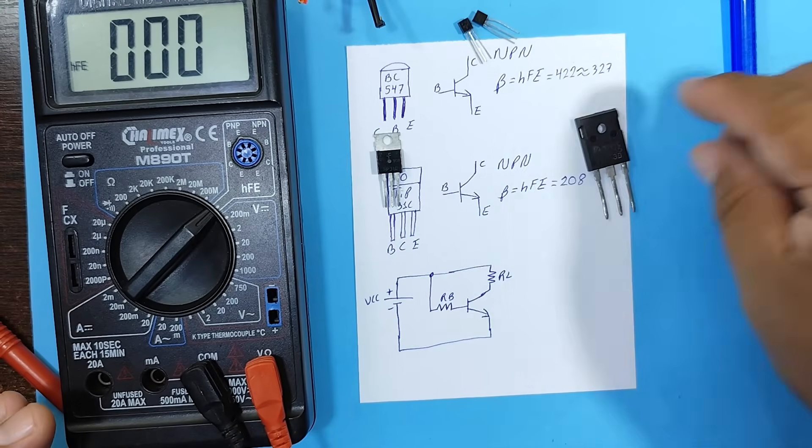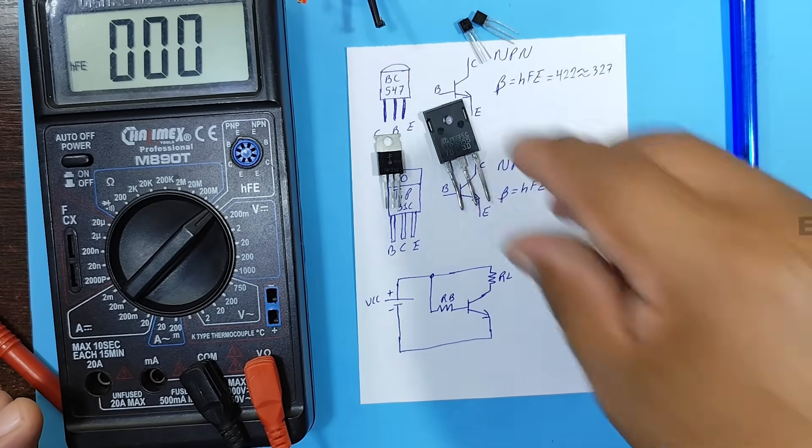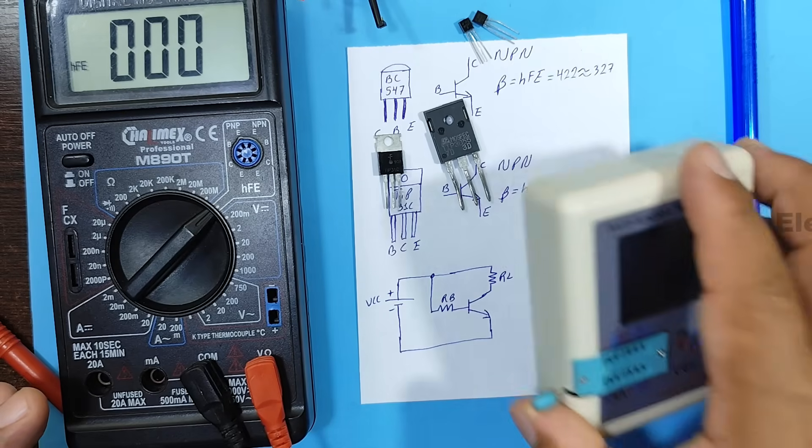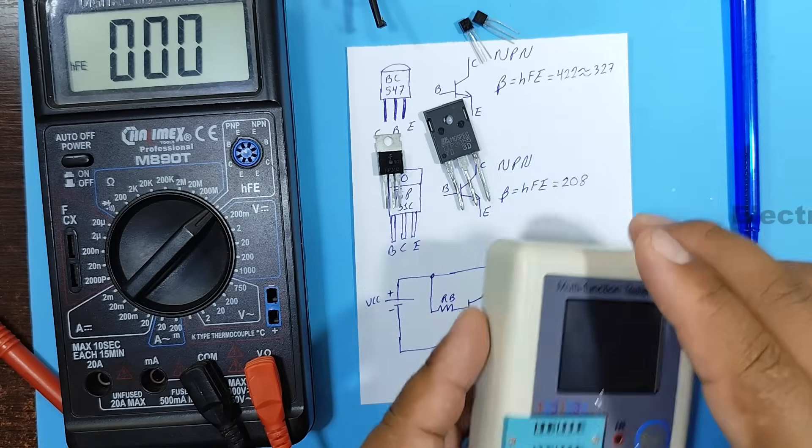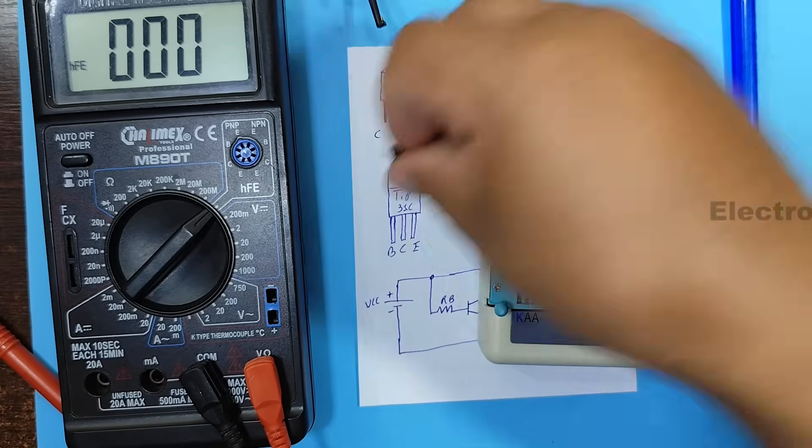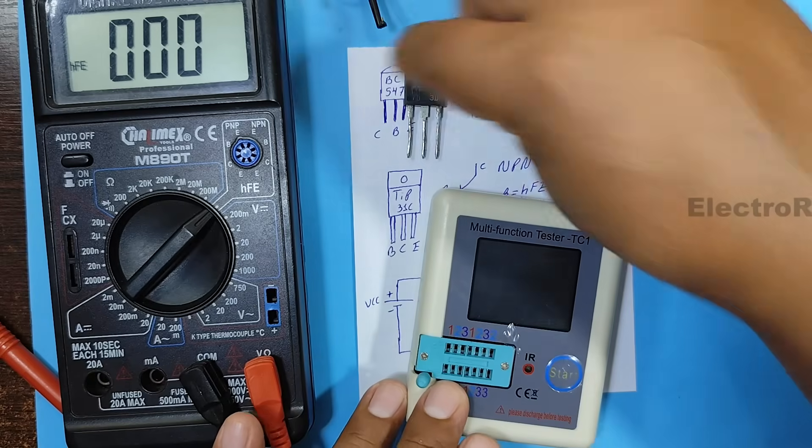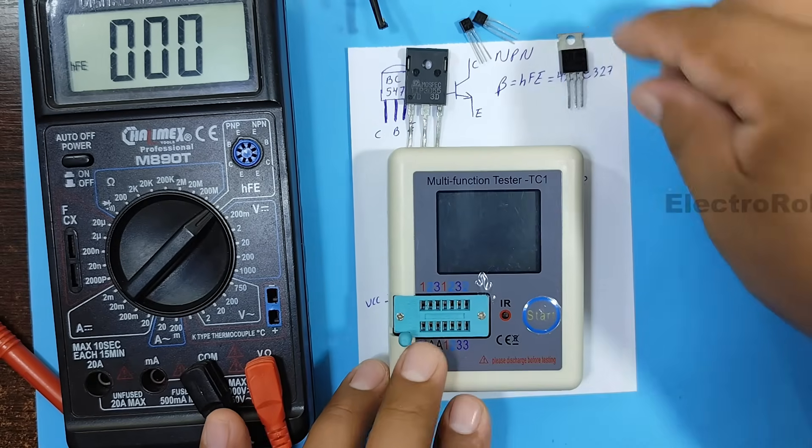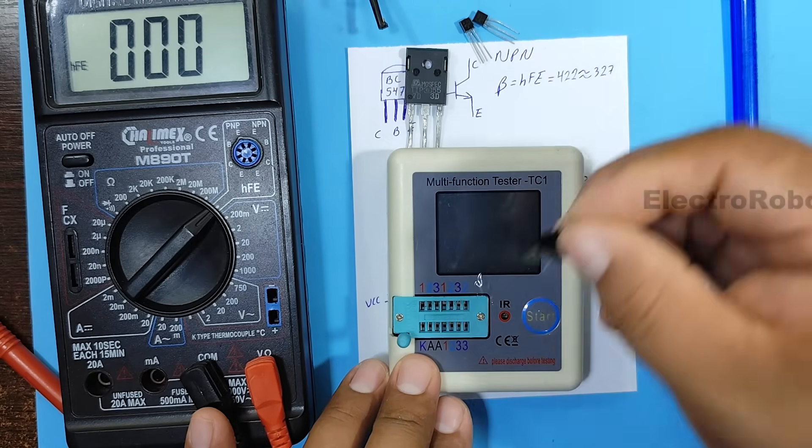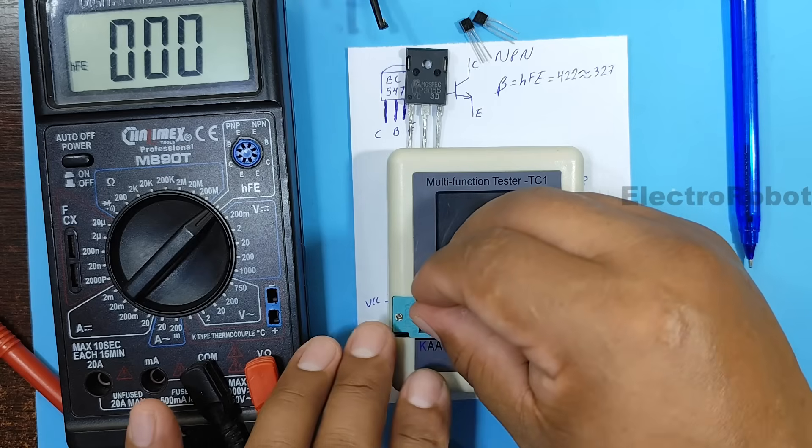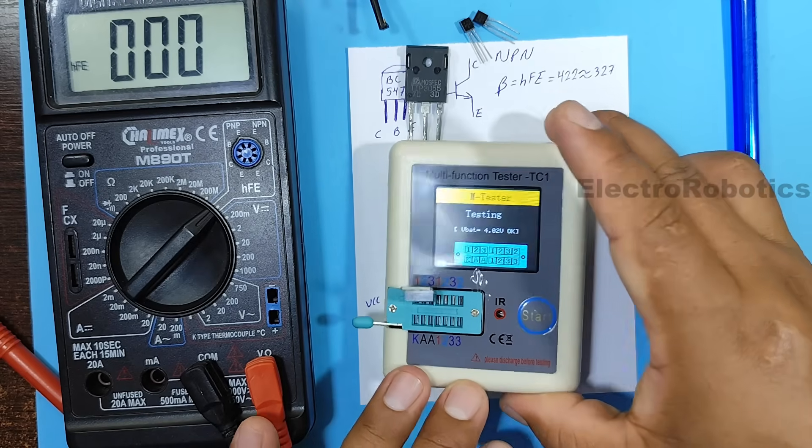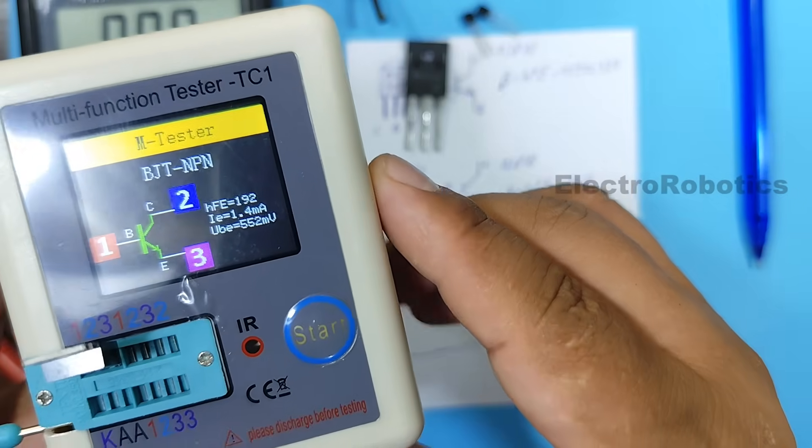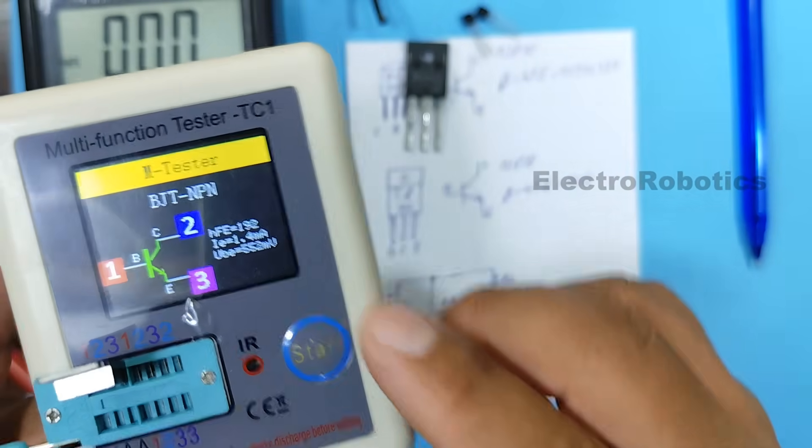However, there are also other instruments that will allow you to obtain the gain of your transistors. I'm talking about this instrument, which will allow us to measure the gain of transistors. So let's see how much gain the tip 31C has. We press it.